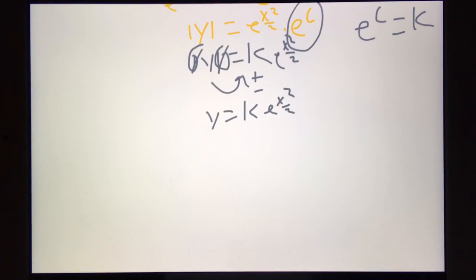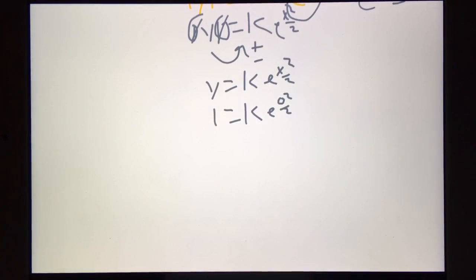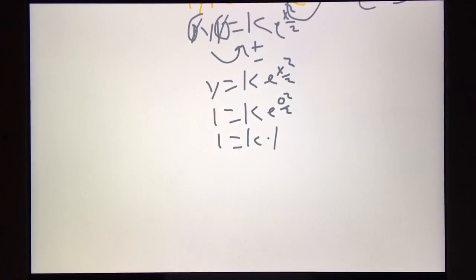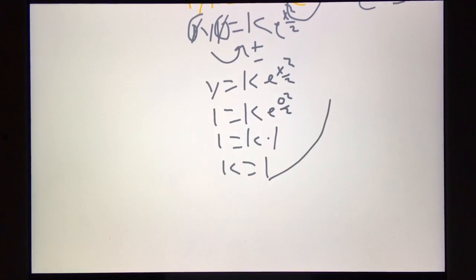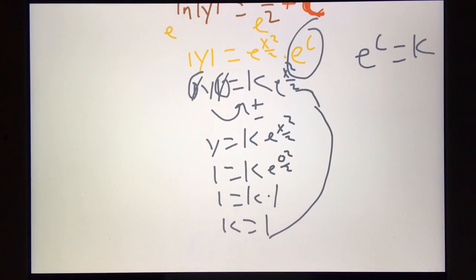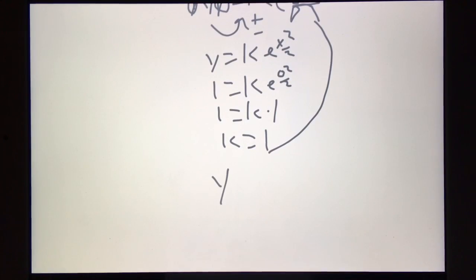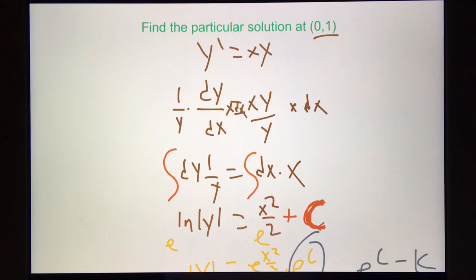So y equals k times e to the x squared over 2. Since we know that y equals 1 and x equals 0, we can solve: 0 squared over 2 is 0, e raised to the 0 is 1, so 1 equals k times 1, meaning k equals 1. Plug that back into our original equation: y equals 1 times e to the x squared over 2. And that's the equation of the line at the point 0, 1.